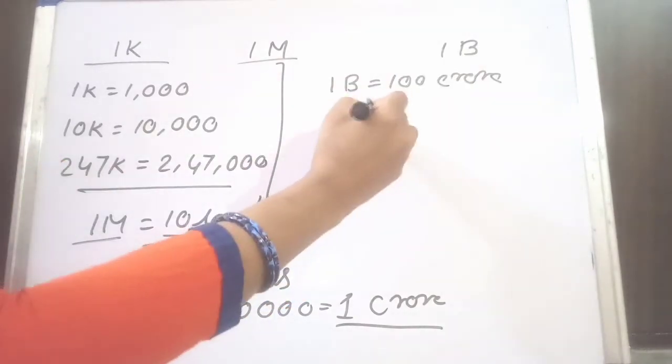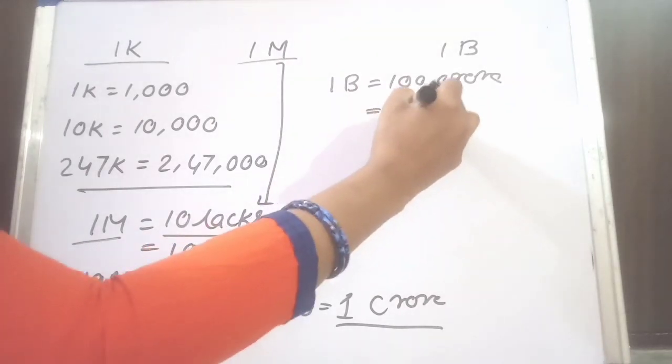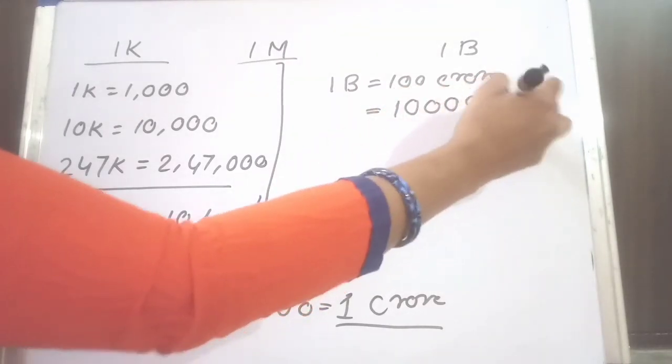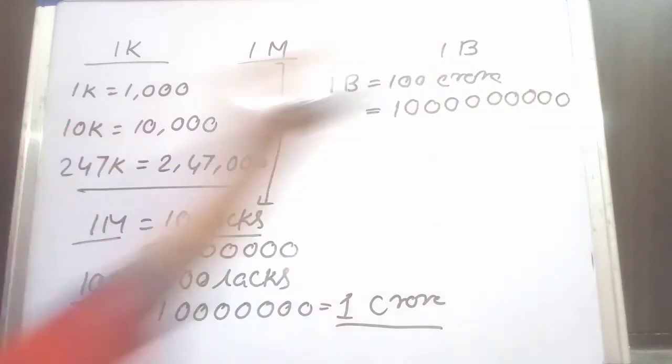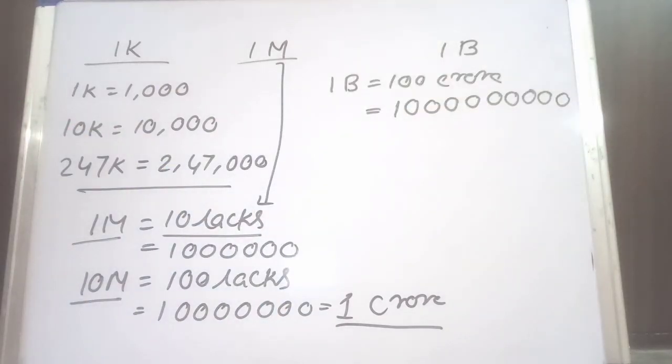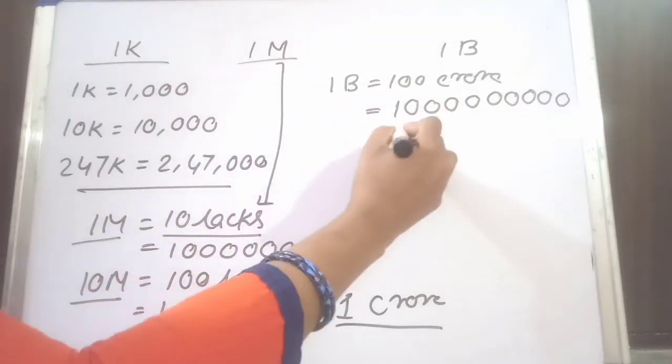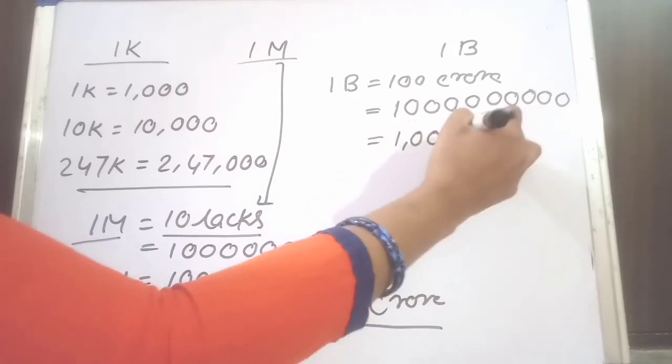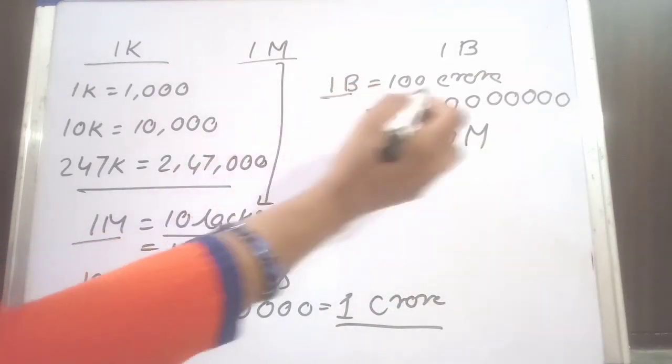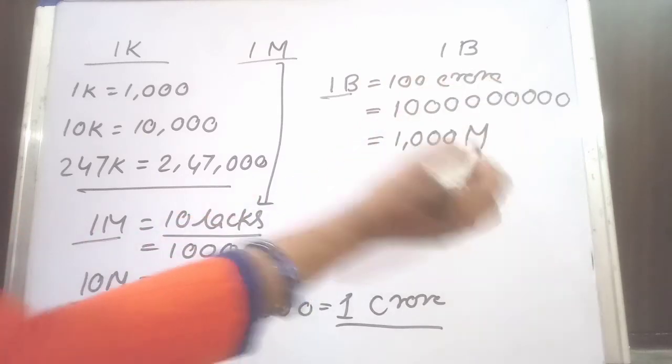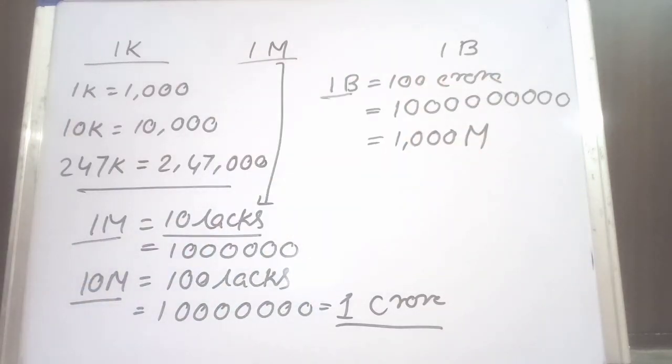100 crore means 1 followed by 9 zeros: 1, 2, 3, 4, 5, 6, 7, 8, 9. That means 1,000 million. 1 billion is equal to 100 crore or 1,000 million.